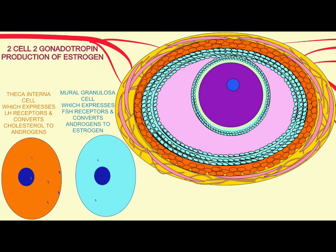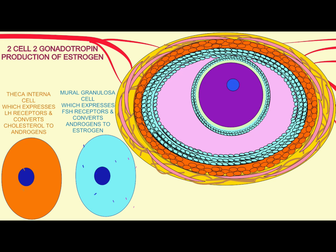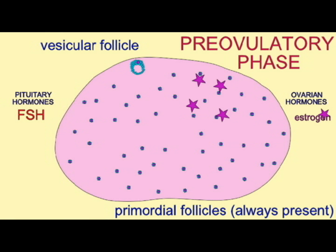The cells of the theca interna, which make the LH receptors, respond to LH by converting cholesterol into the androgen precursors of estrogen. The granulosa cells, which make receptors for FSH, will then convert those androgens into estrogen.